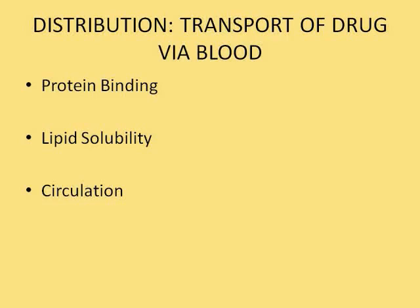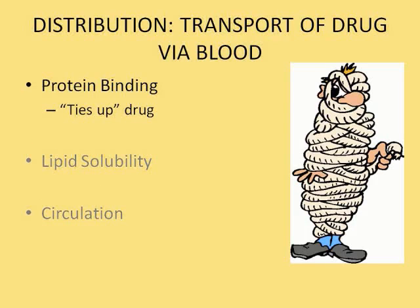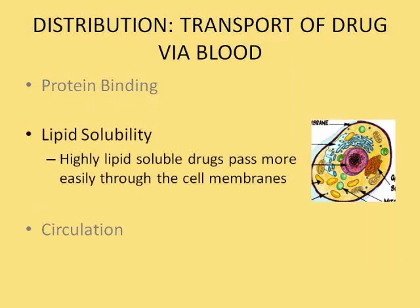Once the drug is in the bloodstream, it needs to be transported to different parts of the body. Three things affect that distribution: protein binding, lipid solubility, and circulation. If a drug is bound by protein, it's not available to treat the body — some drugs are very susceptible to this. The cell membrane has a high lipid concentration, so drugs that are highly lipid soluble can more easily cross into the cell.